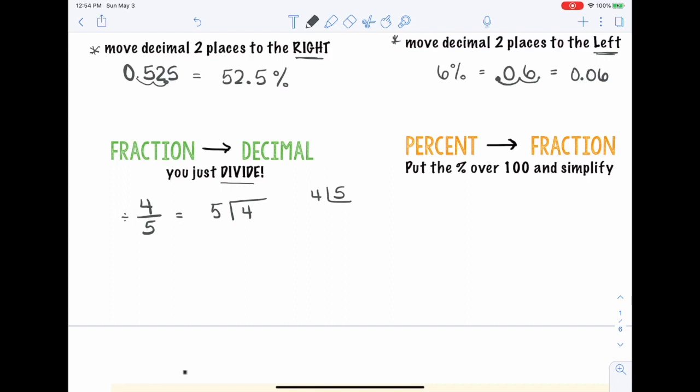Now, dividimos nomás. Cinco entre cuatro, you can't do. So I'm going to put a zero here, add my decimal y ahora puedo agregarle otro cero aquí. Cinco entre cuarenta is going to give me eight. Eight times five is forty. Restar and you have nothing left over. So this is equal to 0.8.